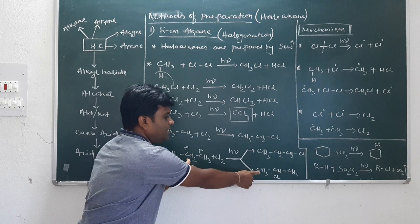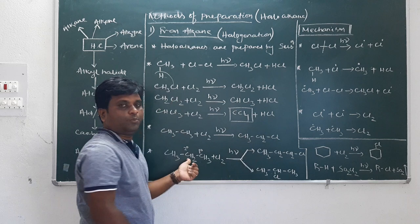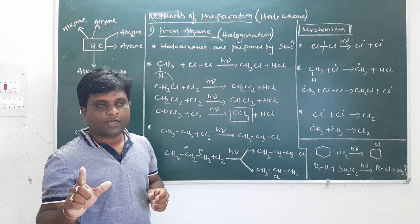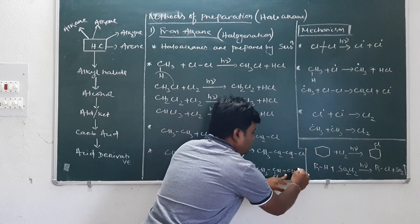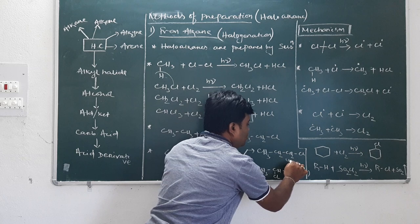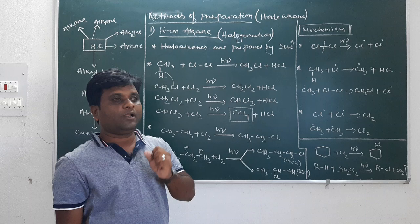One is the major product and another is the minor product. 2-chloropropane is the major product with 55% yield, and 1-chloropropane is the minor product with approximately 45% yield.